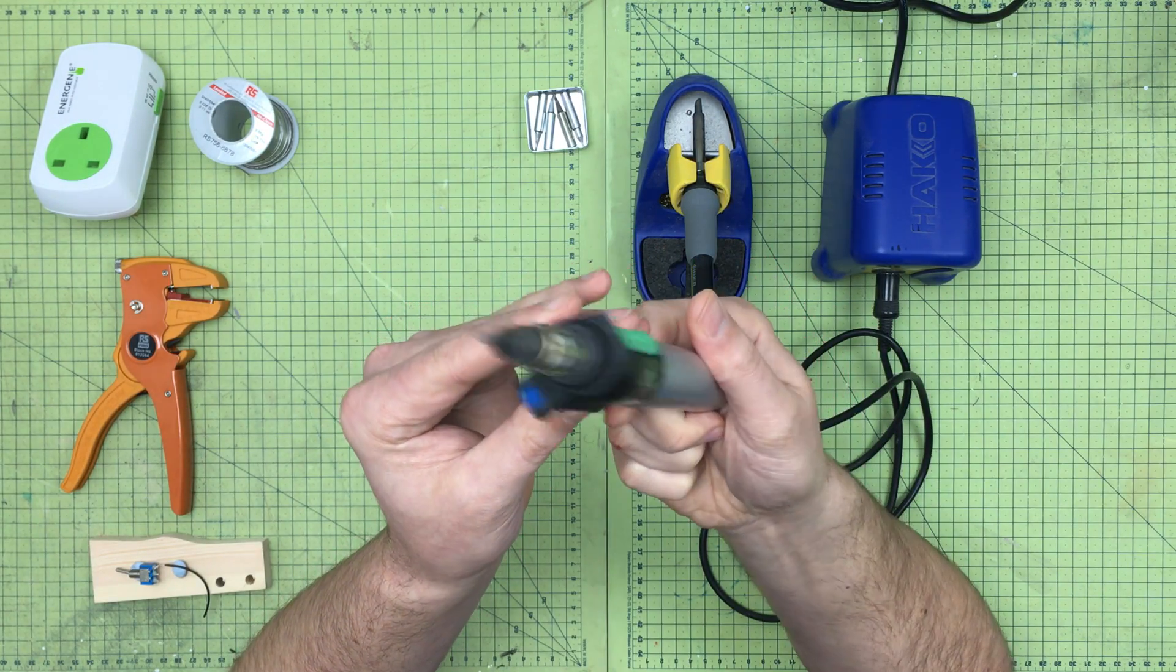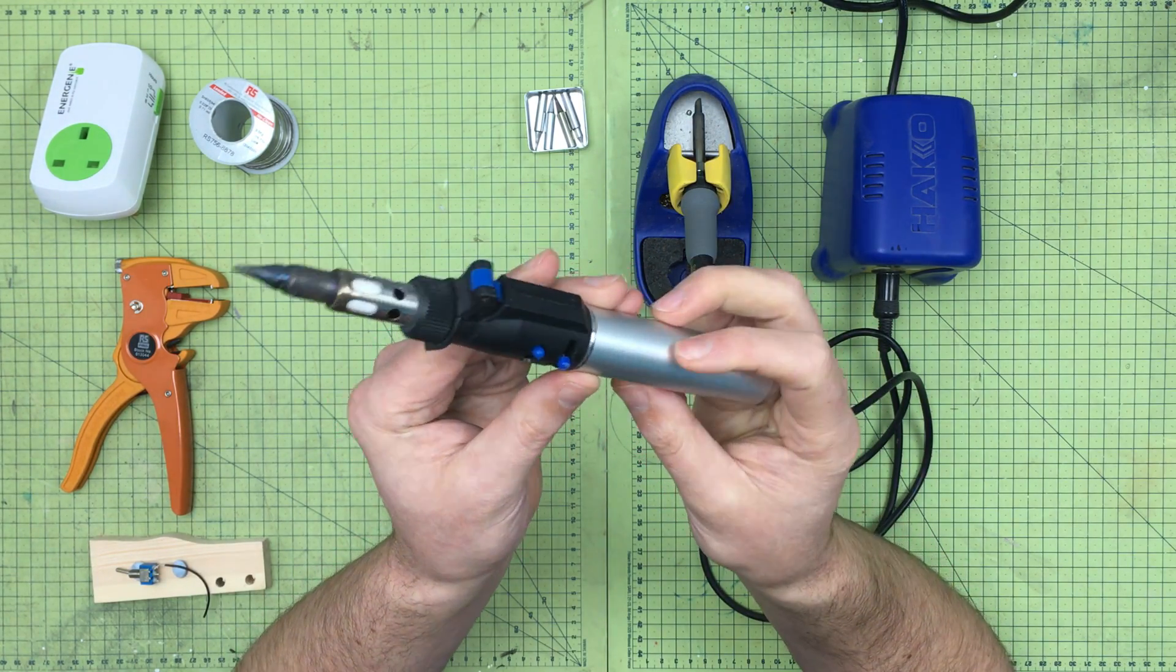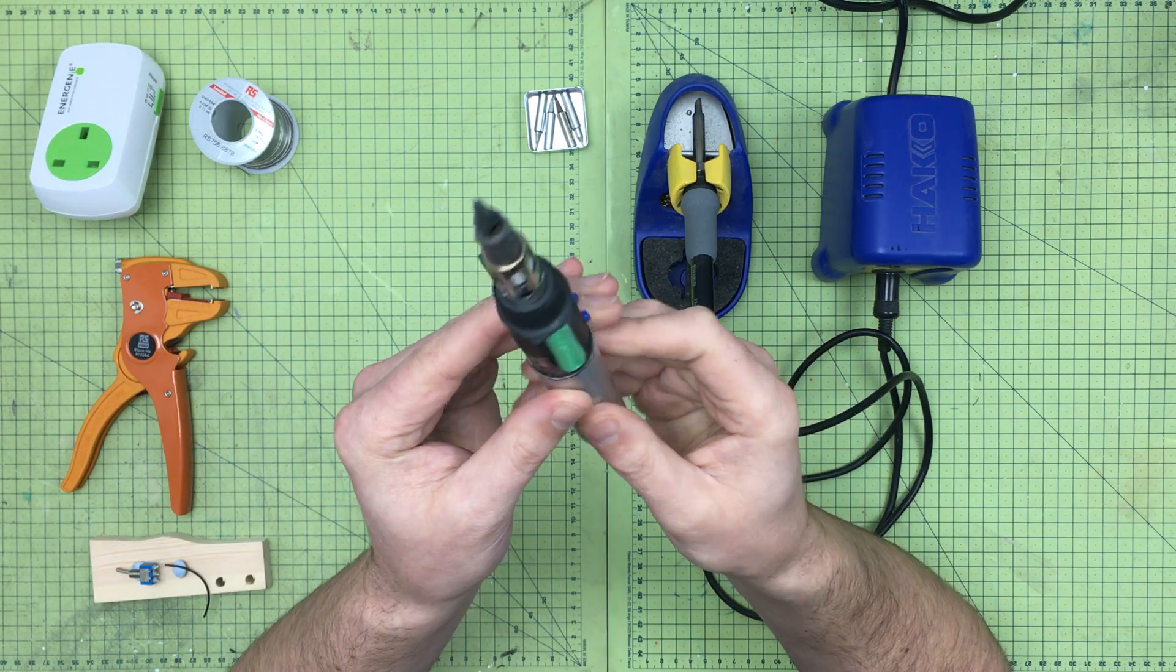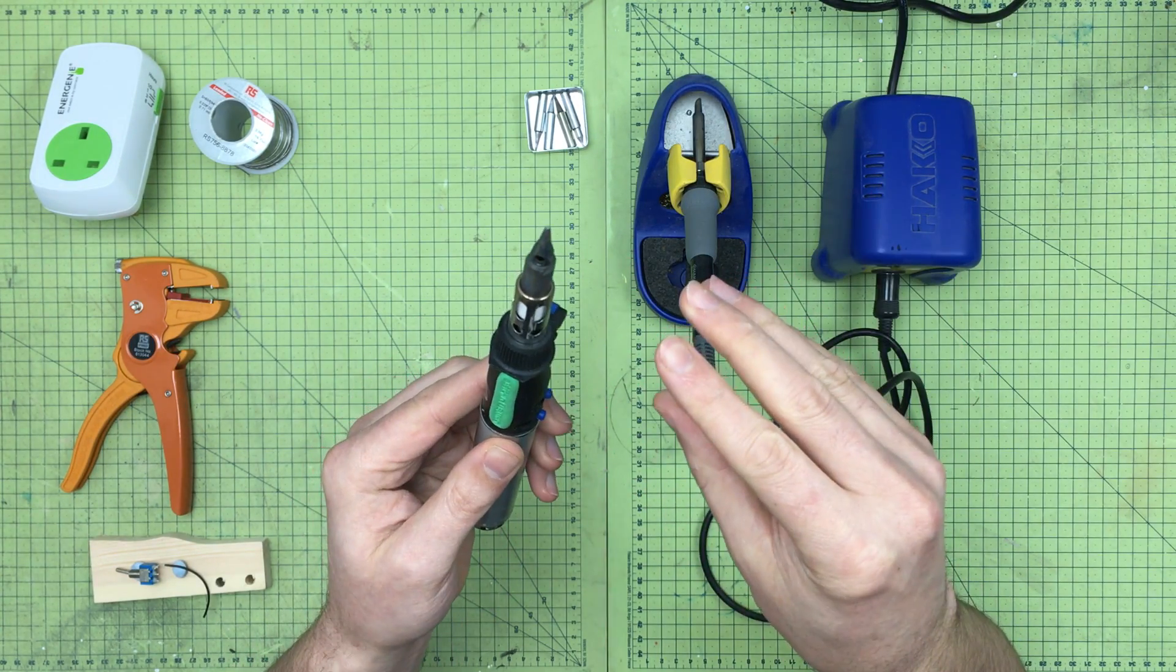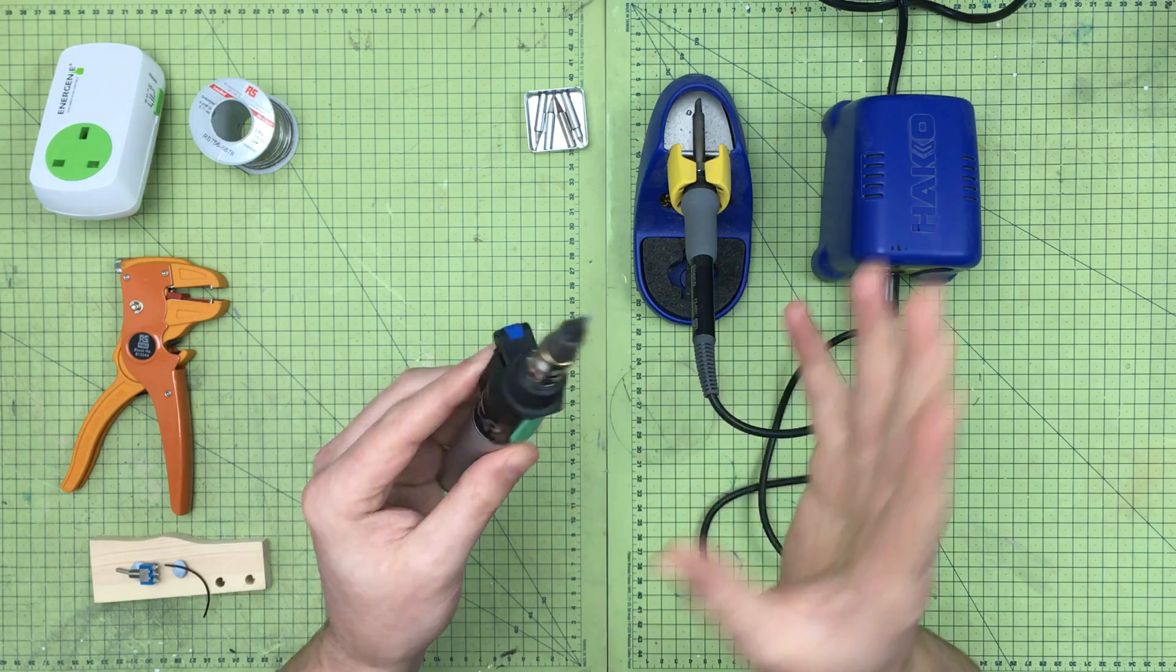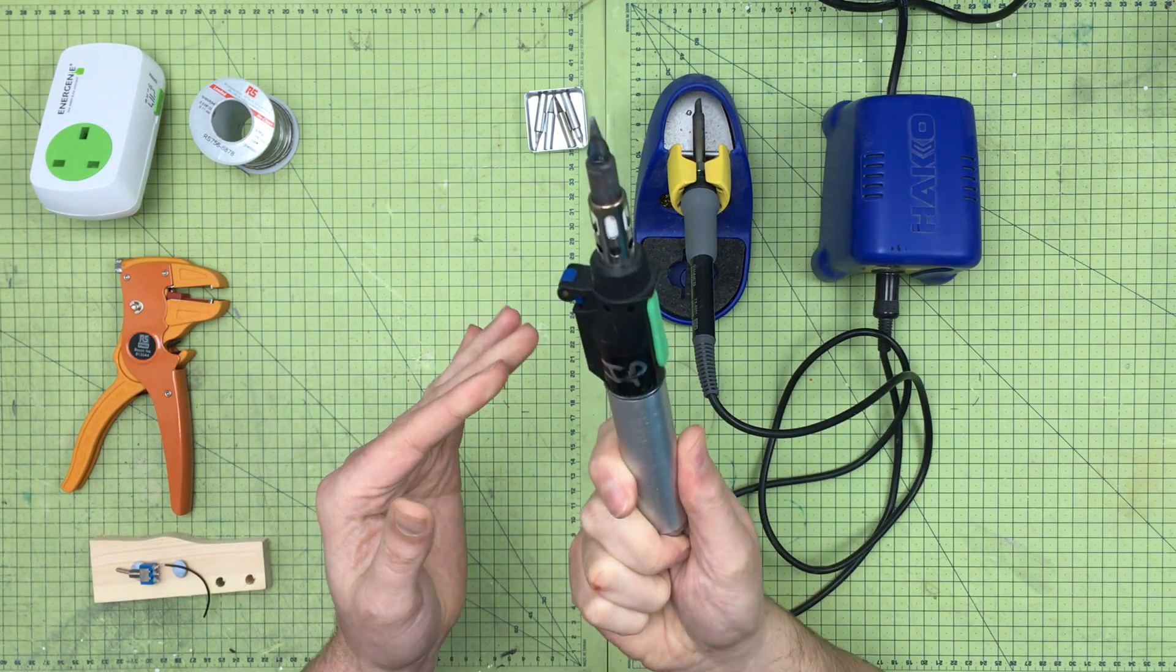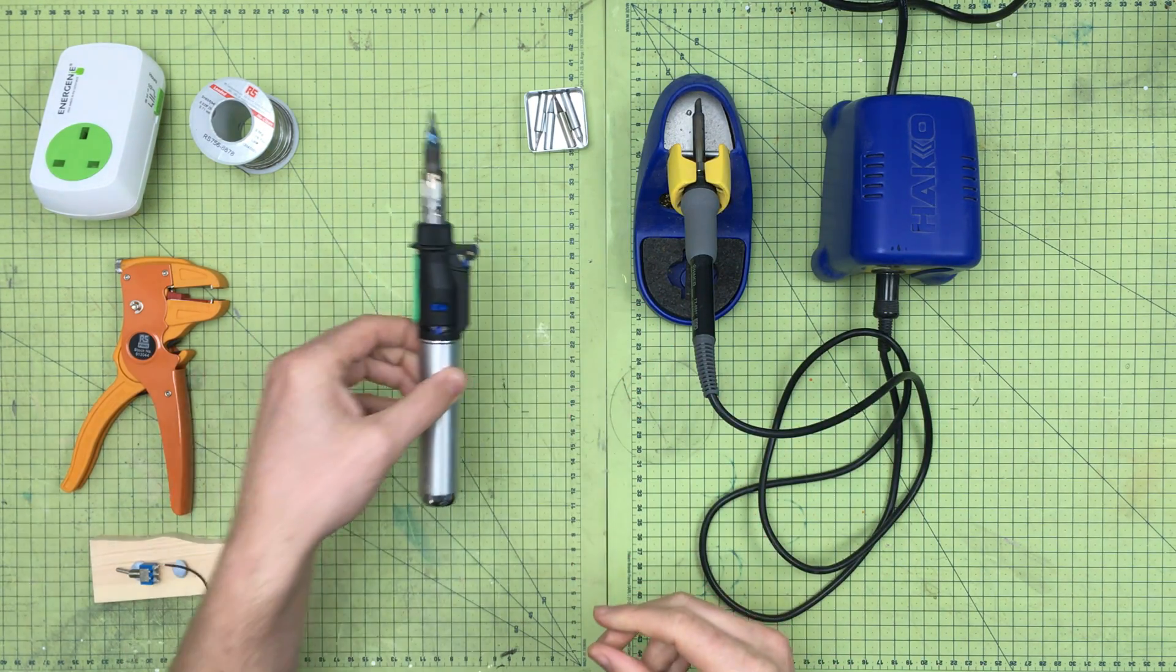It's a gas-powered Dremel VersaTip soldering iron. It also has a bunch of other stuff that it works with, sort of heat stripping and all that, but primarily I'm talking about it as a portable soldering iron.